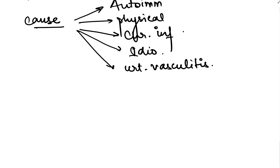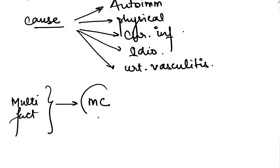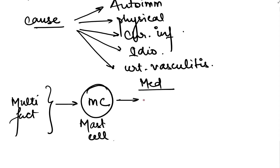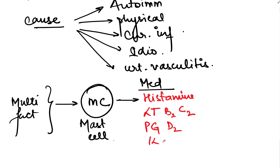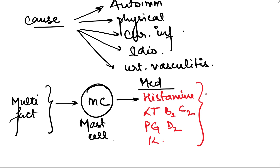If you understand the pathology, all these multiple factors ultimately lead to stimulation of mast cells. These mast cells are activated and start releasing their mediators. The common mediators are histamine, along with various others like leukotrienes B4 and C4, prostaglandin D2, and various interleukins.